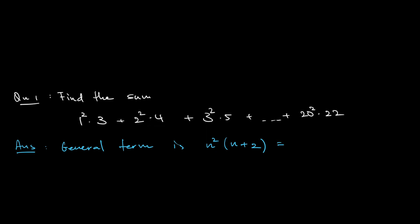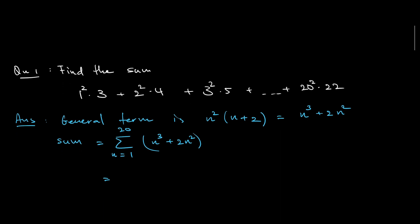Expanding, each term equals n³ + 2n². So the sum can be written in summation form: n running from 1 to 20 of (n³ + 2n²). I can break this into the summation from 1 to 20 of n³, plus 2 — since 2 is constant and doesn't depend on n, I take it out — multiplied by the summation from 1 to 20 of n².